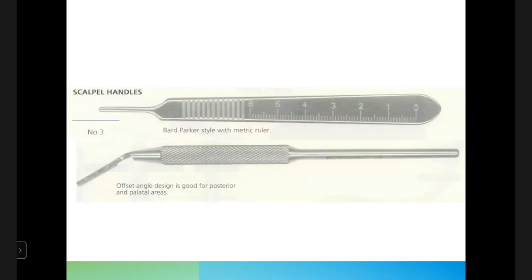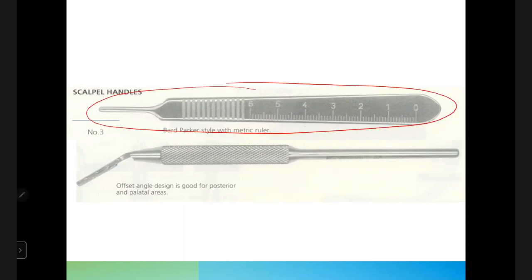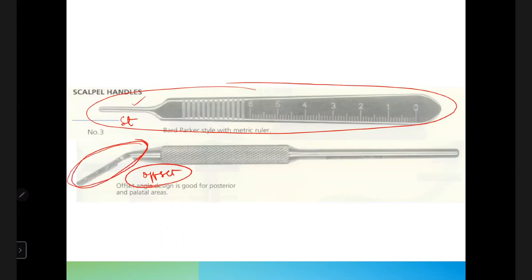Blades are attached to handles called scalpel handles. There are two types: a straight handle and an offset-angle handle. For posterior regions and the palatal aspect, where a straight blade cannot be used effectively, the offset-angle blade holder is used.